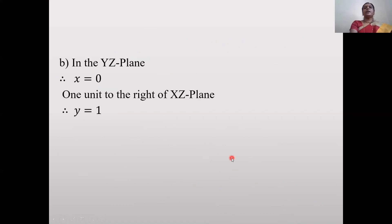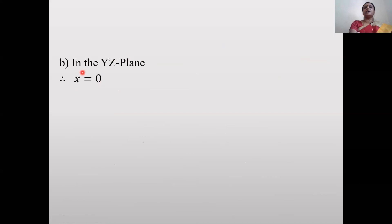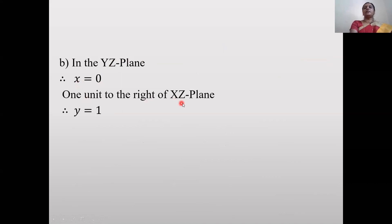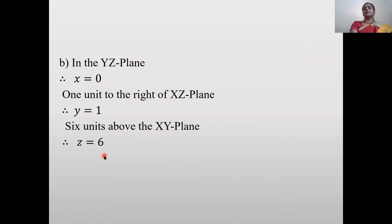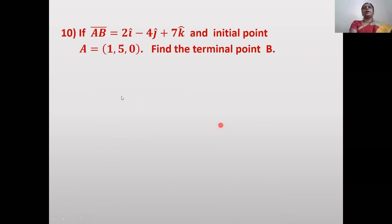Second part: Find coordinates of point in the YZ plane, 1 unit to the right of XZ plane, and 6 units above XY plane. Point in YZ plane → x = 0; 1 unit right of XZ → y = 1; 6 units above XY → z = 6. Coordinates: (0, 1, 6).